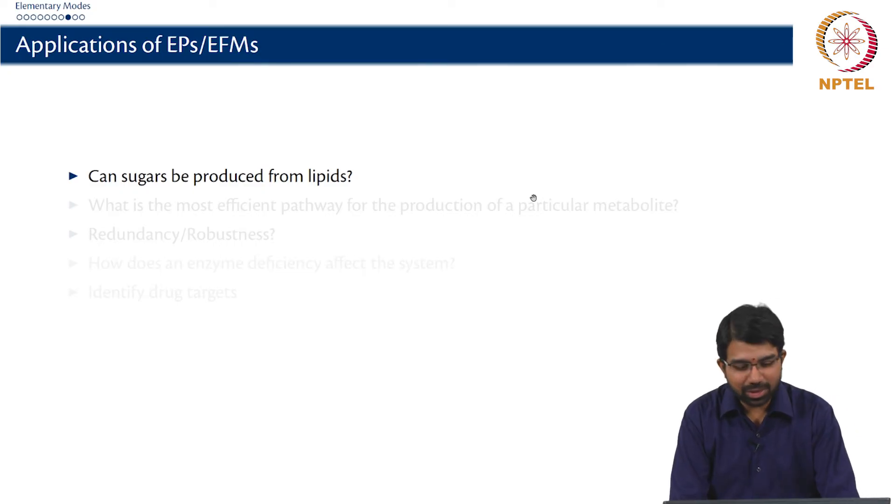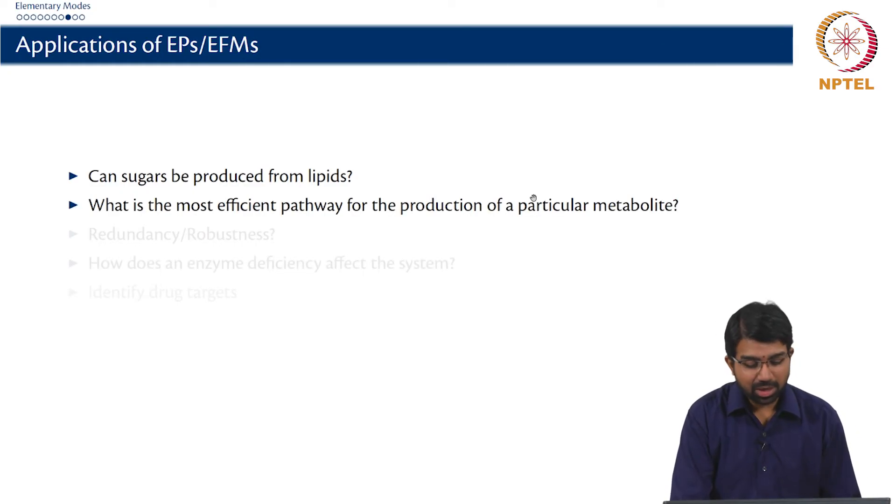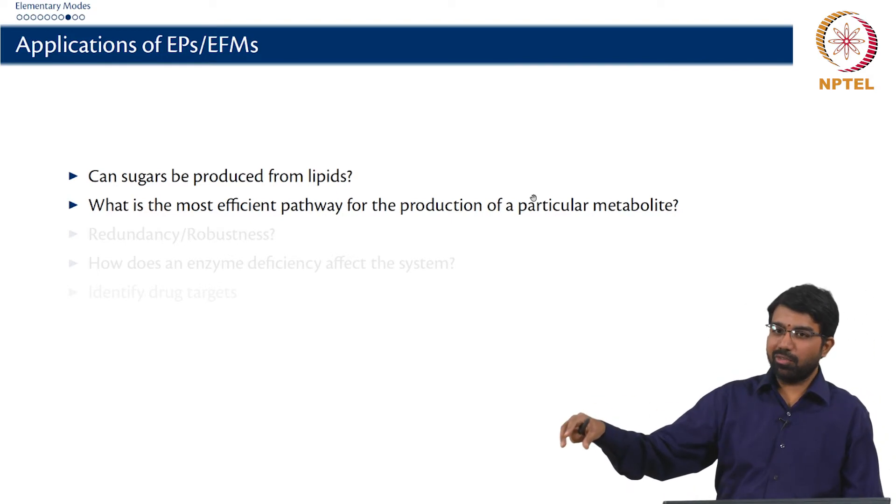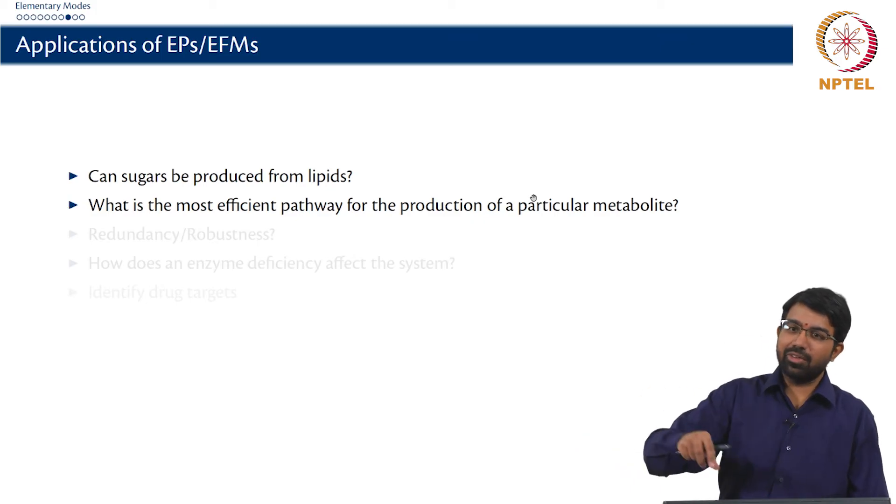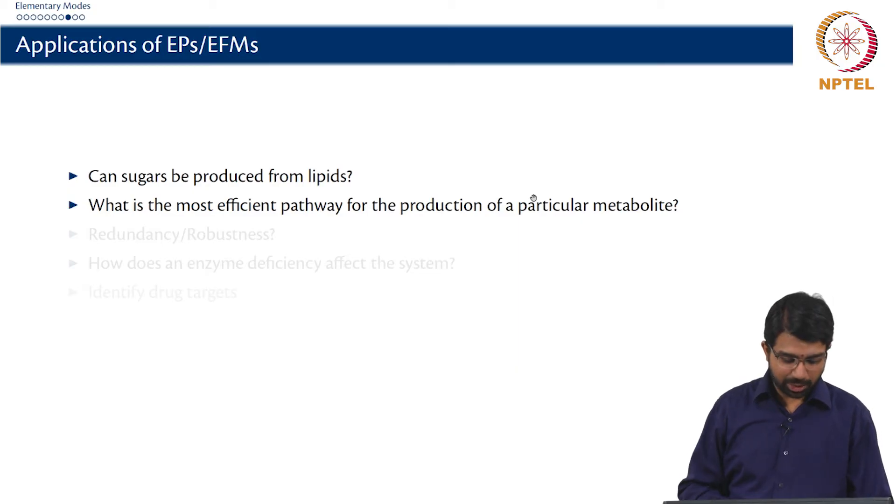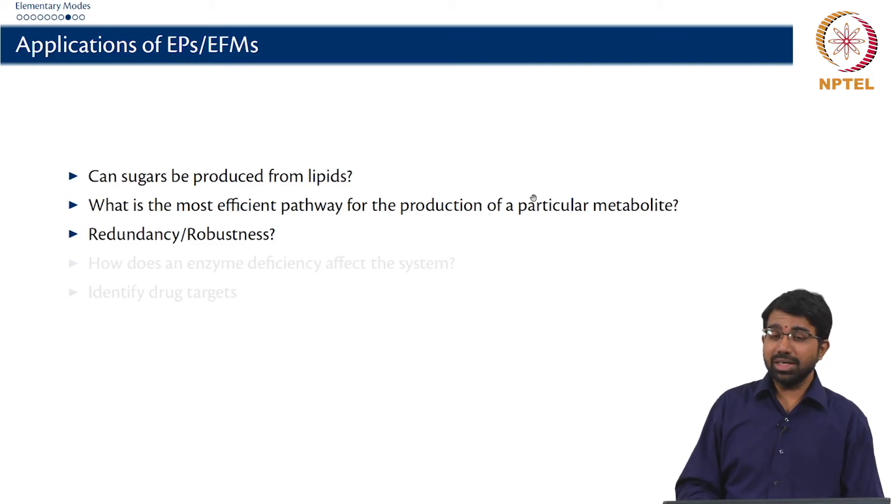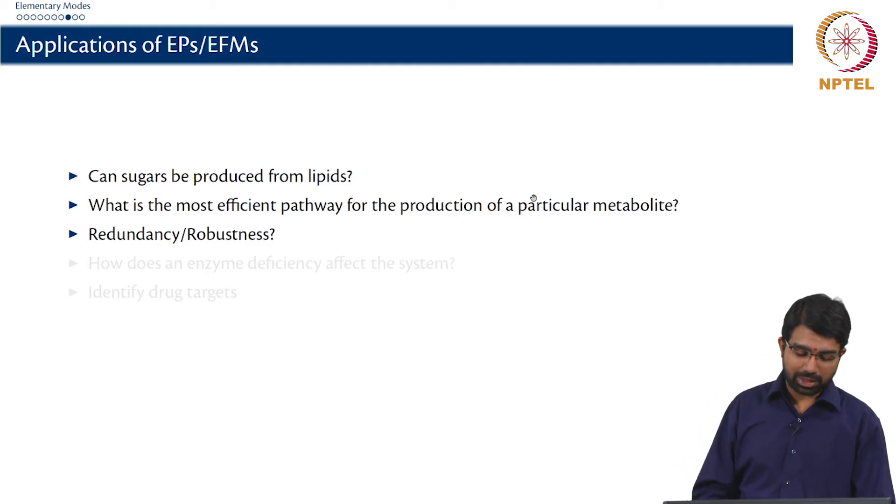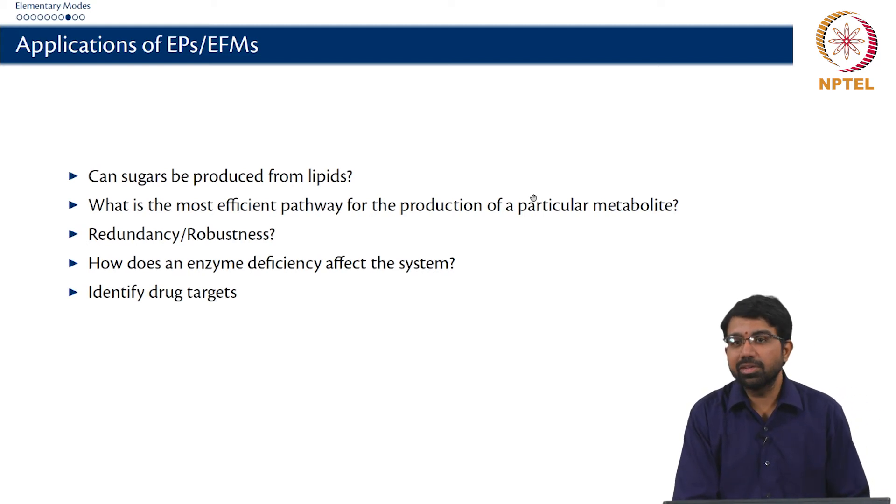So there are many interesting applications for EPs and EFMs. Can sugars be produced from lipids? What is the most efficient pathway for the production of a particular metabolite? You can look at stoichiometry. If I use this EFM, I will get X amount of product per Y amount of substrate. How redundant? Do you have multiple EFMs between a pair of compounds? That will mean it is pretty robust, because you need to disable both EFMs to stop the production of the next compound. How does enzyme deficiency affect the system? Can you identify drug targets? If you have an essential EFM, many of the enzymes in that EFM will be potential drug targets, assuming it is a pathogenic organism.